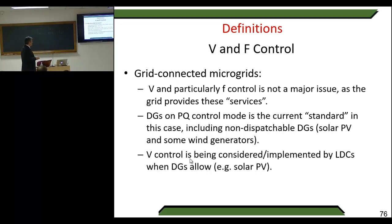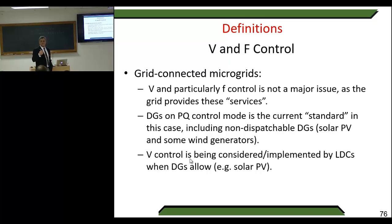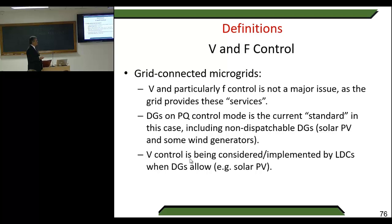In grid-connected microgrids, DGs in PQ control mode is the current standard, including non-dispatchable distributed generators like solar photovoltaic and some wind generators. You normally go to a PQ control with some power factor, try to move with MPPT at maximum power, and rely on the network to support this. The problem is that when you need to be isolated, you need a very clear strategy for islanding operation. Voltage control is also being considered, implemented by LDCs when DGs are low.